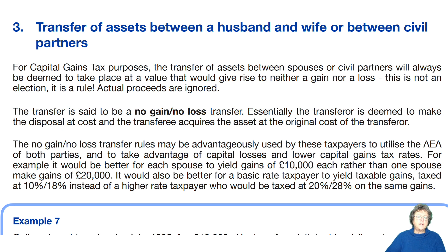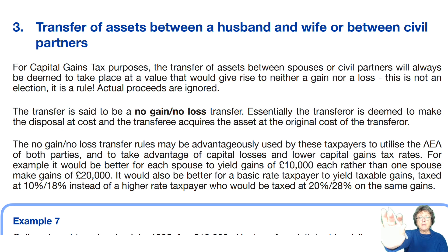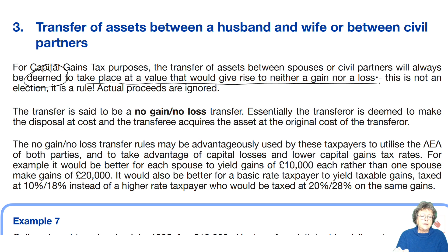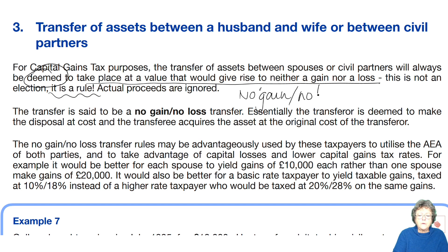The next aspect is what happens when we transfer assets between husbands and wives. These are connected persons, and earlier in the chapter we talked about arm's length transactions. Anything that takes place between husbands and wives is deemed to take place at a value that gives rise to neither a gain nor a loss. This is not an election — it is a rule. It's called a no gain, no loss transaction. That is the technical term the examiner and marker will expect you to use.